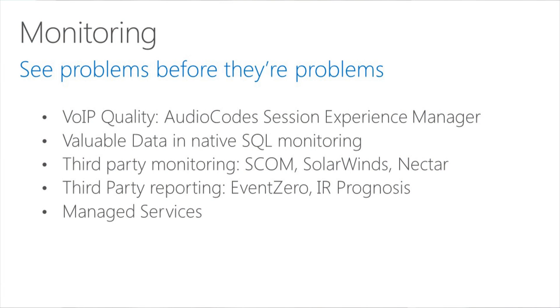Monitoring — SCOM is great, but there's so much more. For VoIP quality, things like the AudioCodes Session Experience Manager (SEM) are huge. You can actually tell where in your network call quality issues are occurring. Third-party monitoring tools like SCOM, SolarWinds, Nectar for your network, and native SQL monitoring — really take a deep dive. Don't just trust that things are okay because servers are up and people aren't complaining. Third-party tools like EventZero can give you deeper insight. And of course there are managed service providers that can do all this heavy lifting for you, even if you're on-premise.